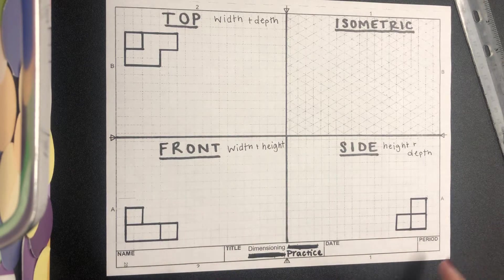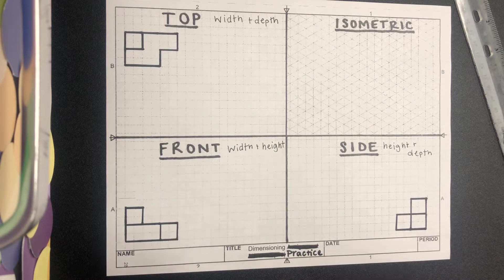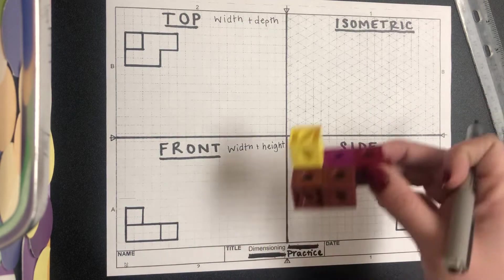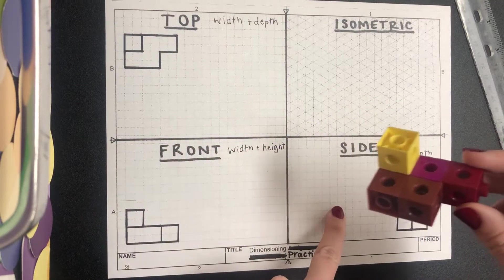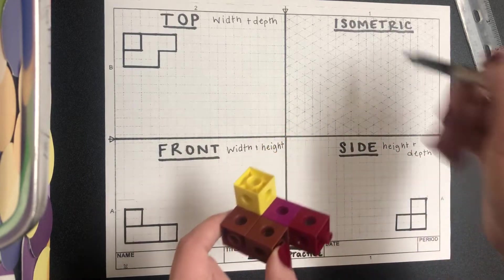We are going to talk about dimensioning. Dimensioning is simply adding measurements to a sketch, and we have to do that in a specific way. I'm going to show you that as we work through dimensioning this multi-view sketch. The first thing we want to think about when dimensioning is the different dimensions of a shape, because technically we're looking at a 3D shape — all of these sketches represent this same shape.